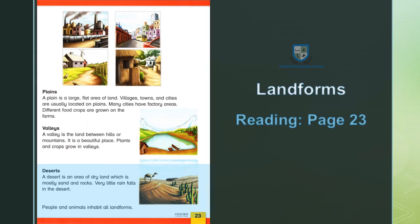Desert — Sehra. A desert is an area of dry land which is mostly sand and rocks. Sehra zameen ka khushk alaqa hai jahan zyada tar ret aur chitanen hoti hain. Very little rain falls in the desert. Sehraon mein bohut kam barish hoti hai.